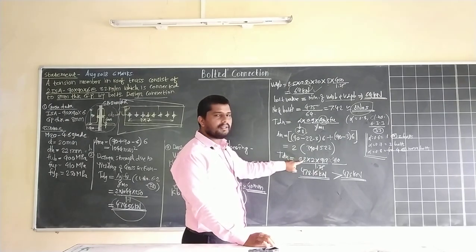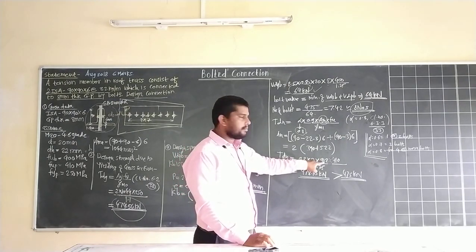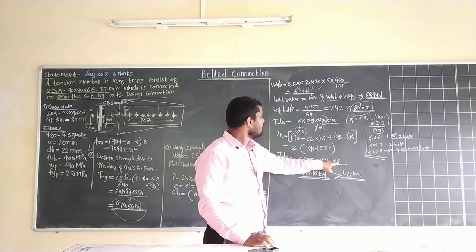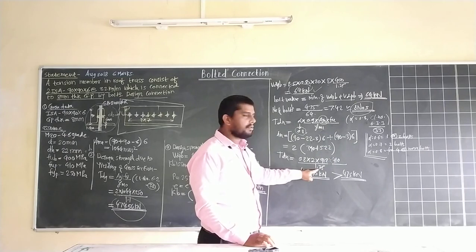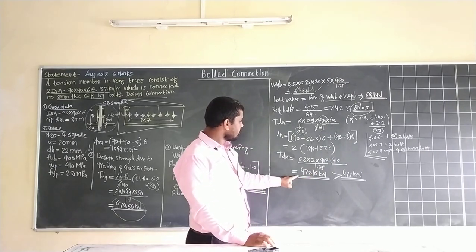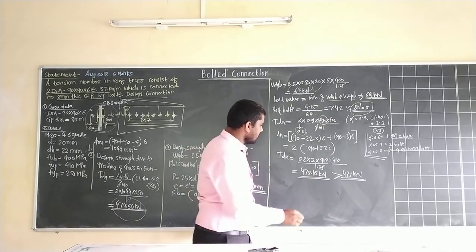T_DL value: alpha is 0.8, 2 into per angle 912 mm square, 410 is F_U value, 1.25 is partial safety factor for this bolt. Final answer is 478.16 kilonewton.